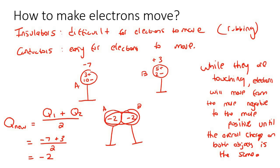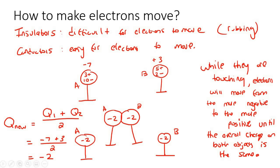When both objects reach the same charge of negative two, they are both the same charge. When charges have the same charge, they don't like each other and push each other away - they repel. So they will push each other away, and both A and B will each have a new charge of negative two.